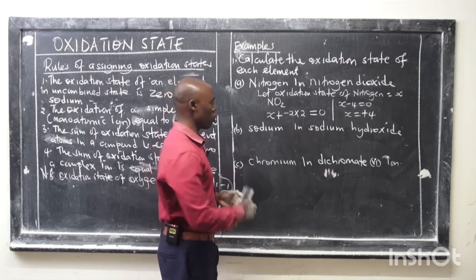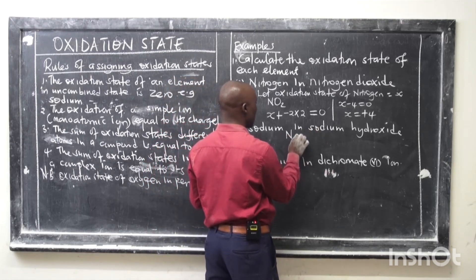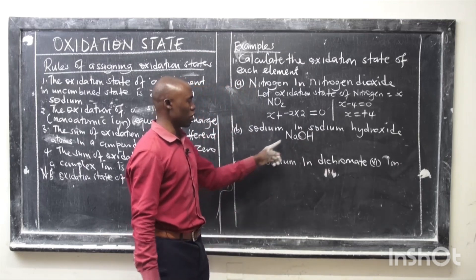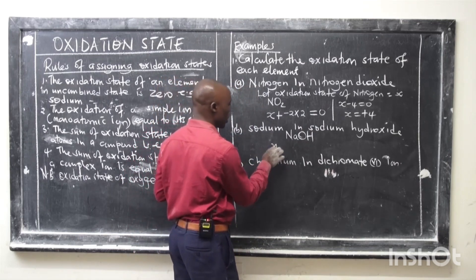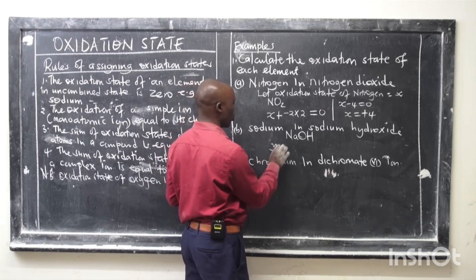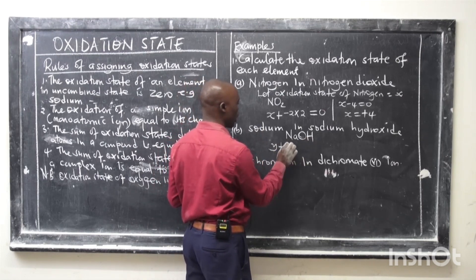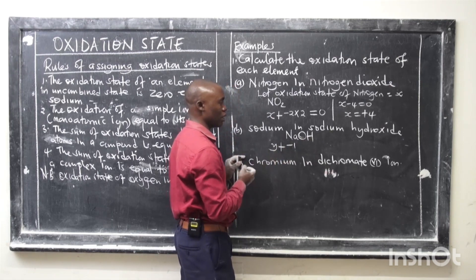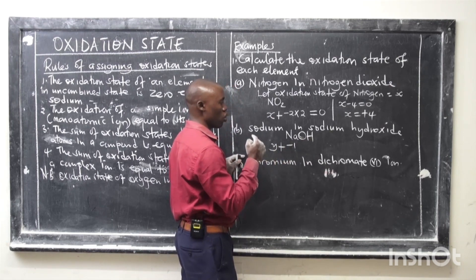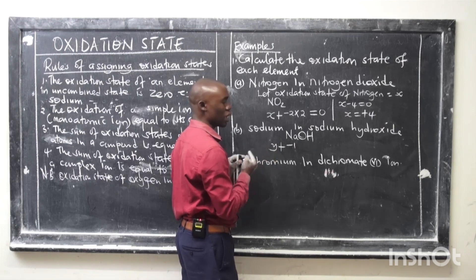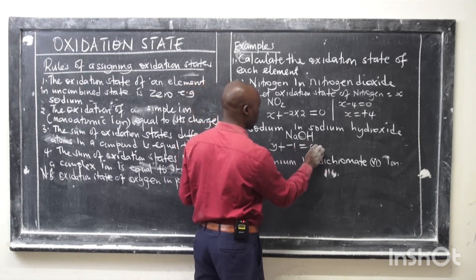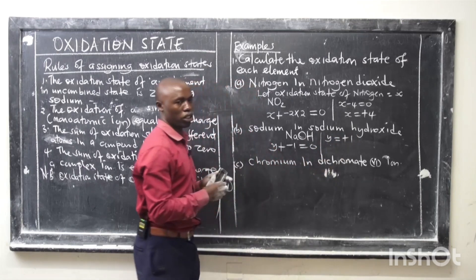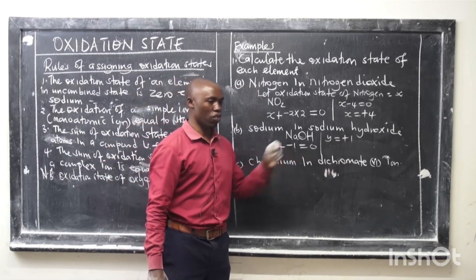Example two: find the oxidation state of sodium in sodium hydroxide (NaOH). Let the oxidation state of sodium be Y. We write: Y + (−1) = 0, since hydroxide (OH⁻) is one entity with a charge of −1. Solving, Y = +1. So the oxidation state of sodium in NaOH is positive one (+1).